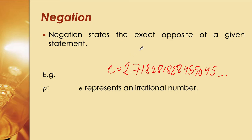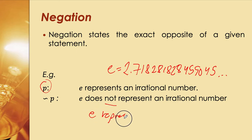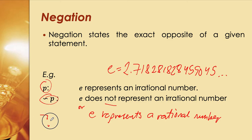So for our example, p is: 'e is an irrational number.' The negation, not-p, states the opposite: 'e does not represent an irrational number,' or more simply, 'e represents a rational number.' If something is not irrational, it is rational. That is our not-p, and we can write it using the tilde symbol.